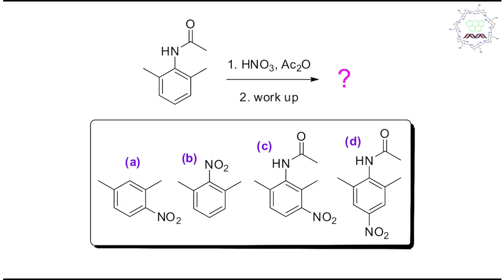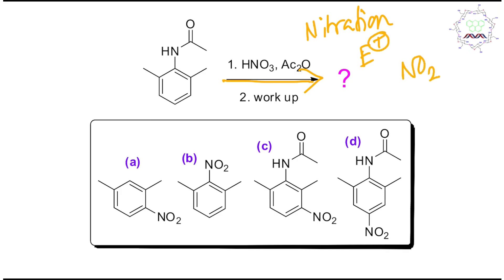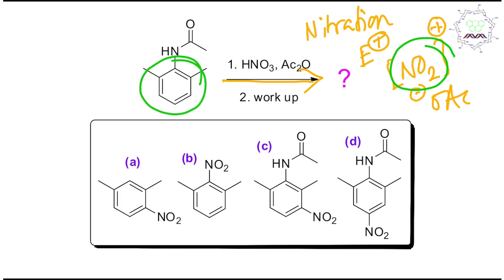As usual, please read the reagent and conditions carefully. This condition — nitric acid and acetic anhydride — is a mild nitration reaction. In this nitration reaction, the electrophile produced is NO2⁺ (nitronium ion). This is actually a nitronium acetate generation reaction, and the nitronium ion acts as the electrophile. Since we have a benzene nucleus, we can expect aromatic electrophilic substitution.